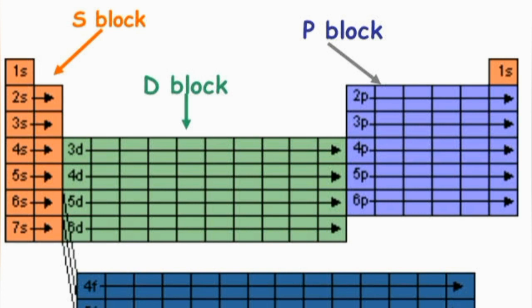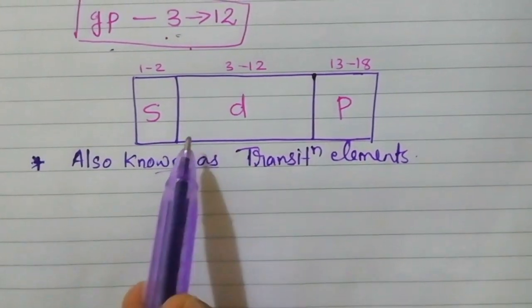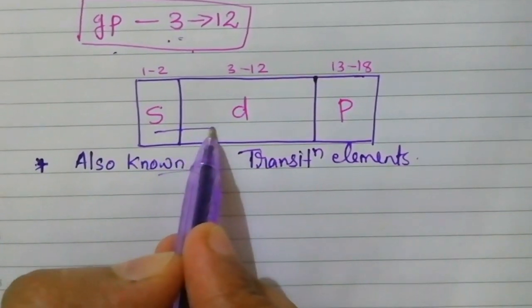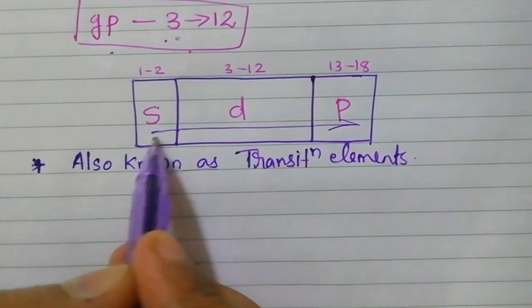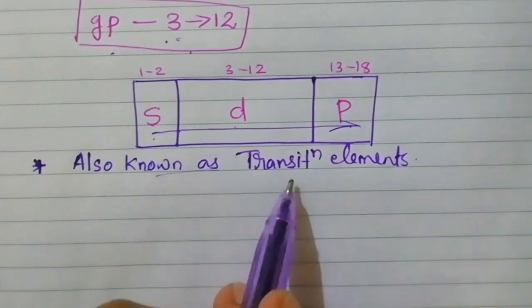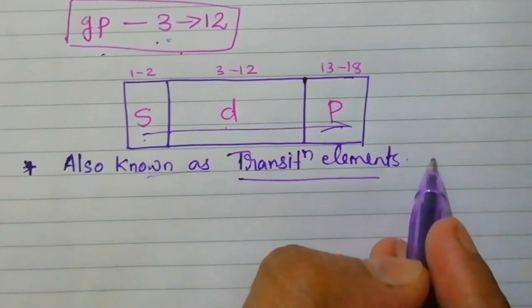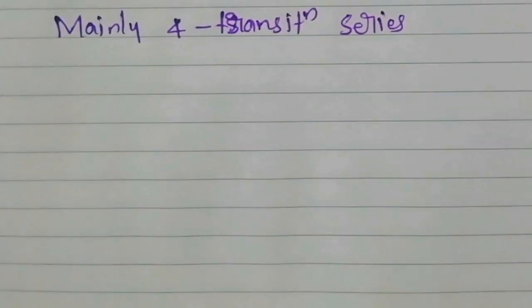D block elements are also known as transition elements, because there will be a transition of properties from S to P. That's why D block elements are also known as transition elements. Remember this term — sometimes we will use 'transition elements' instead of 'D block elements'.